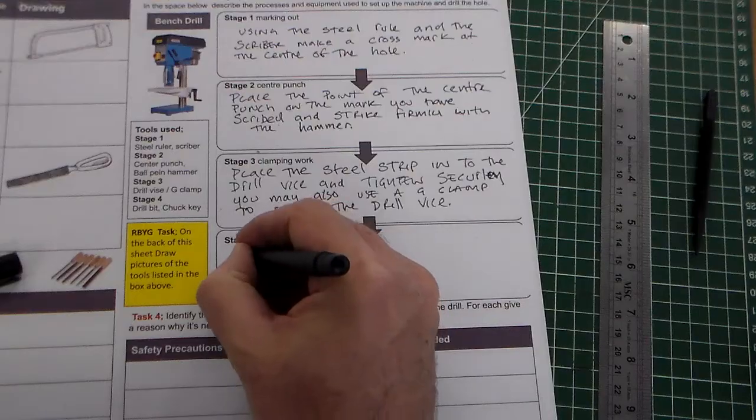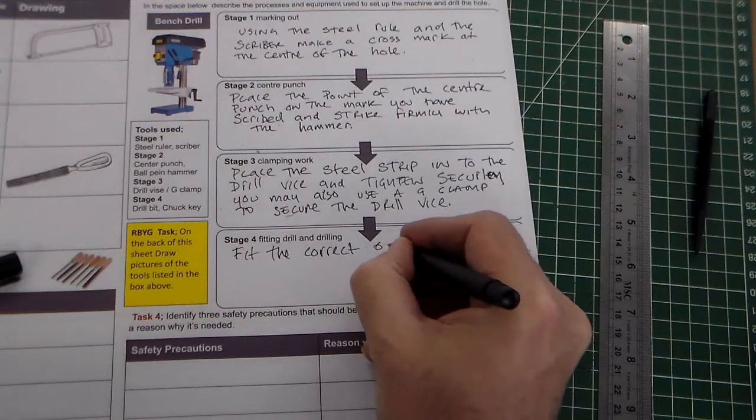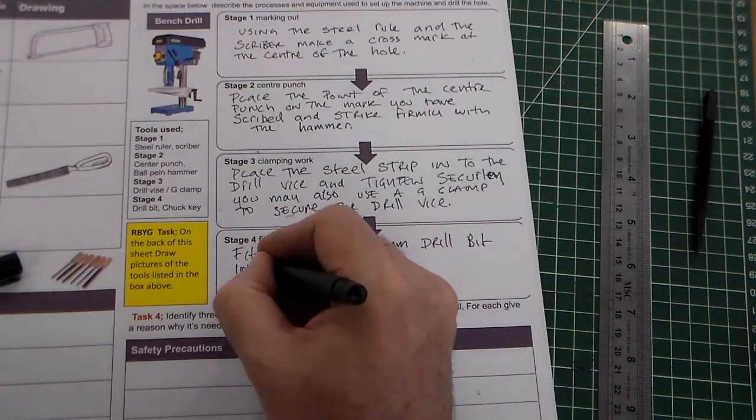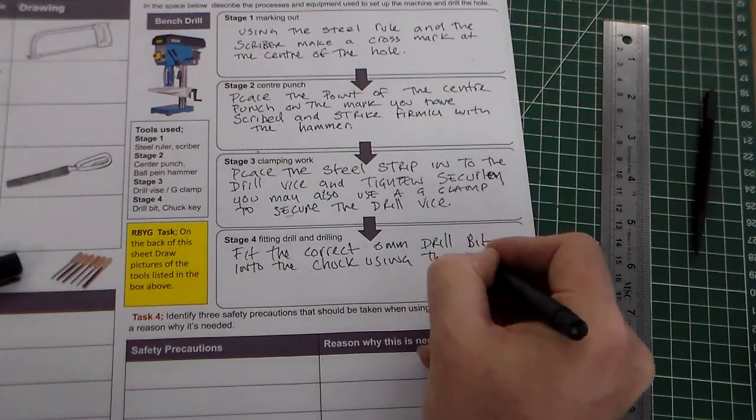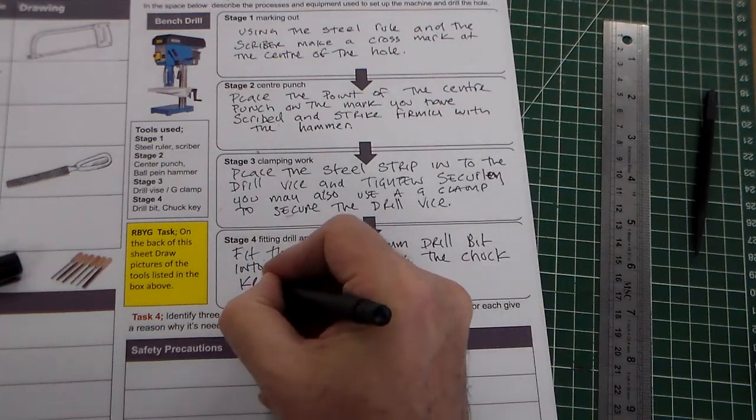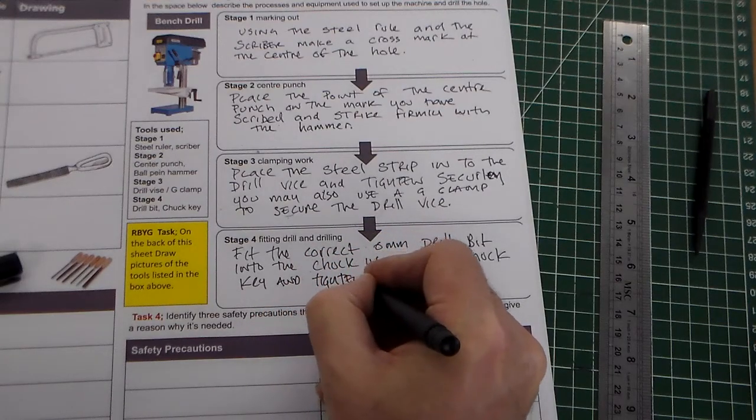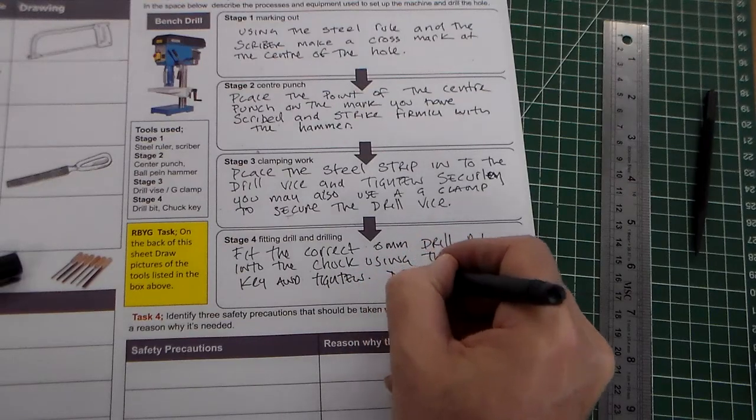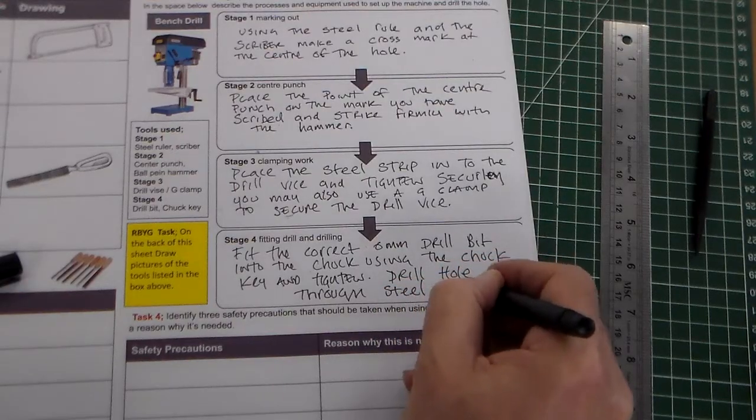So, last stage would be fit the correct six millimetre drill bit into the chuck using the chuck key. And tighten. And then drill hole through steel strip.